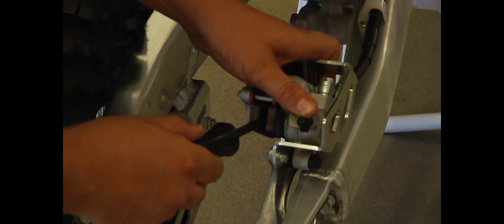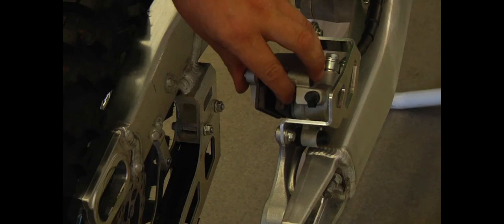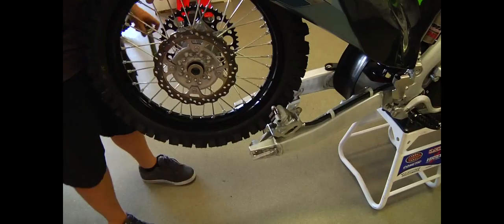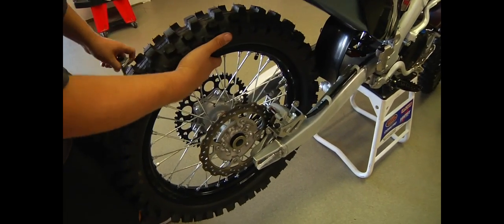It makes it a little easier if you separate out the brake pads. Just be real careful not to mar up the pads. Just barely spread them apart. Makes it a little easier to install your wheel into the disc side.